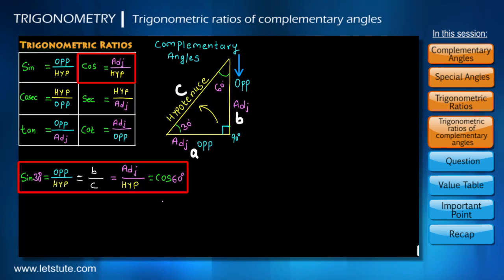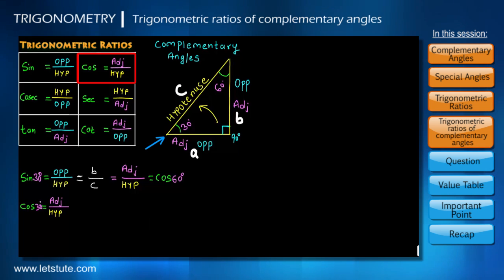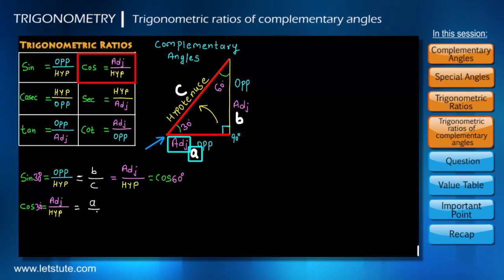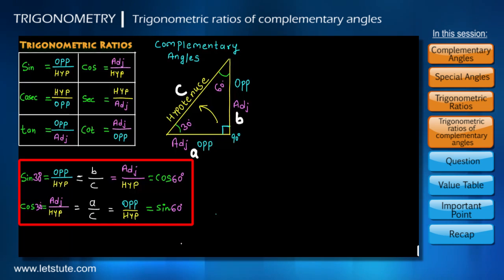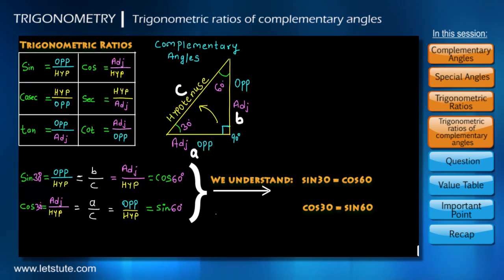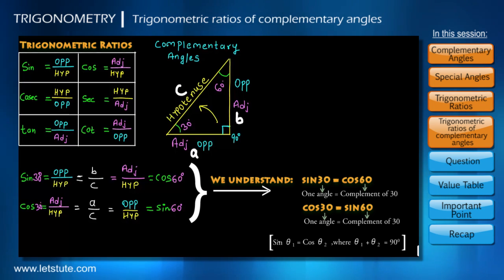In the same way, cos 30 is the ratio of adjacent side to hypotenuse. The adjacent side of 30 degrees is A, so cos 30 equals A upon C. For the 60 degrees angle, since A is the opposite side, A upon C becomes sin 60. Therefore, the value of cos 30 is the same as sin 60. What we understand is that sin of one angle is the cosine of its complement and vice versa. In fact, sin will always equal cos for any two angles that add up to 90 degrees.